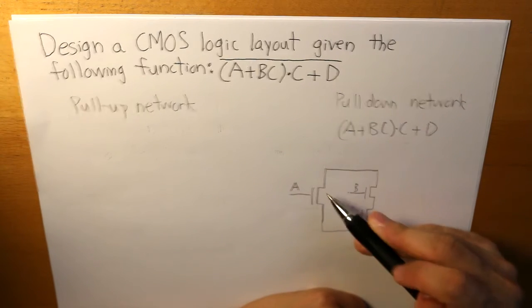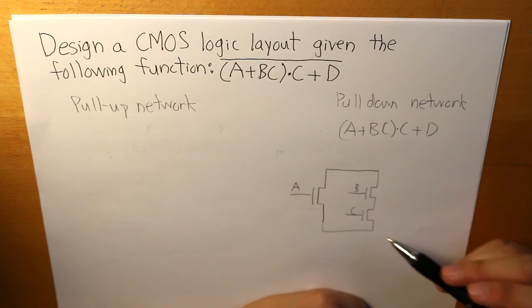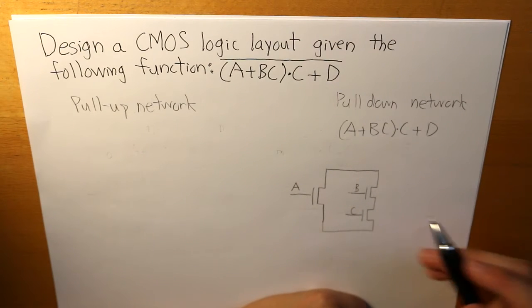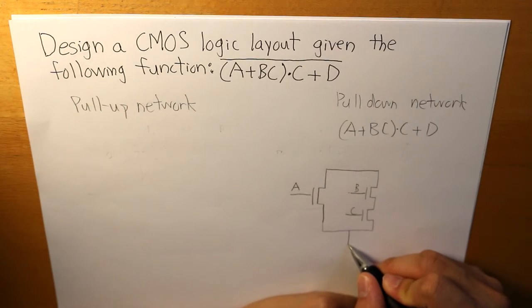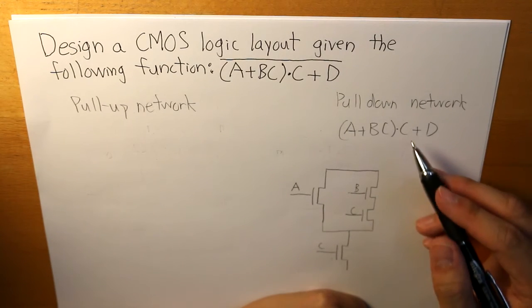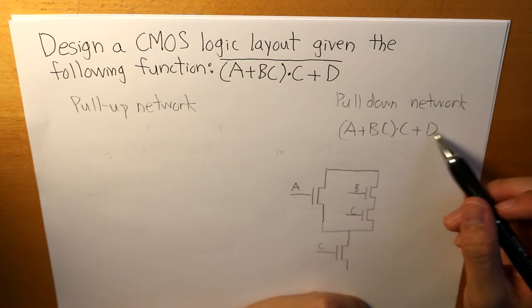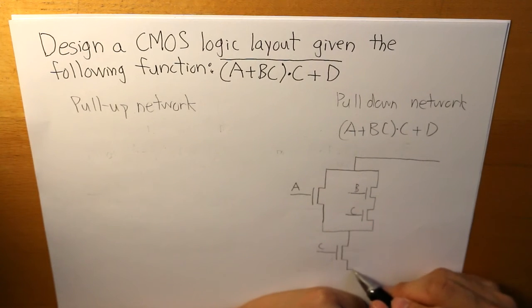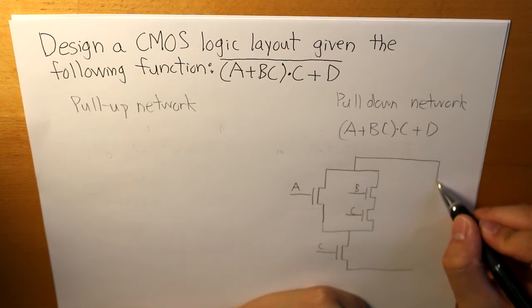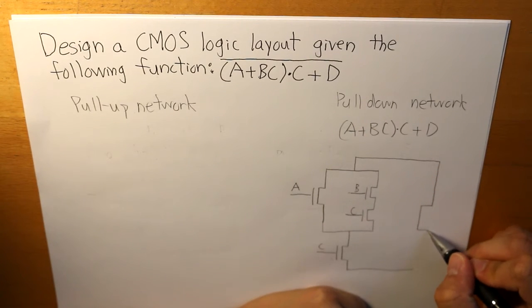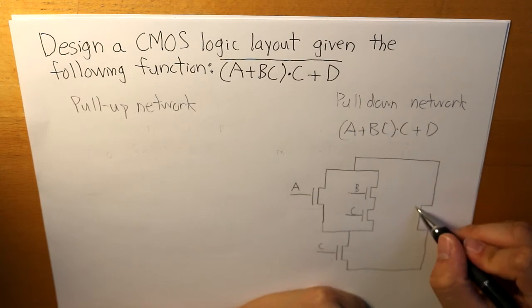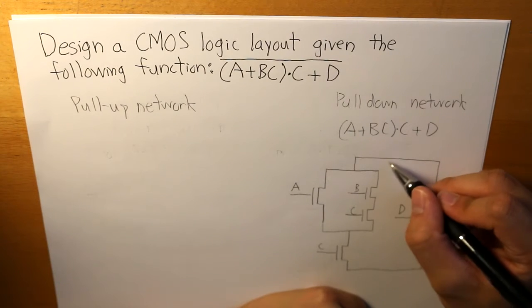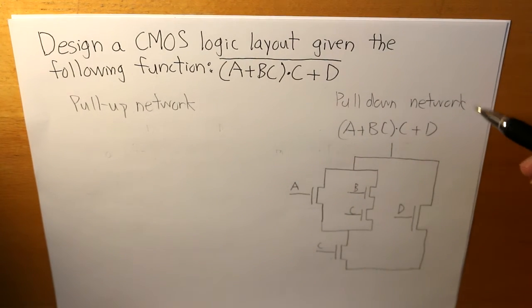And then this whole thing would basically be in series with another input of C. And this entire thing would be in parallel with D. And that is what our pulldown network is.